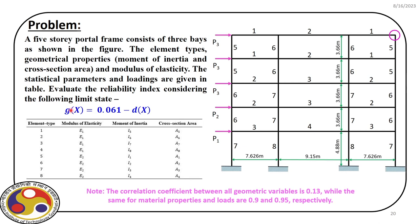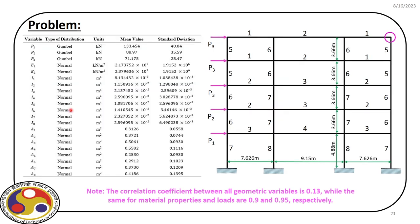All the random variables are defined here. Altogether we have 21 random variables: cross-sectional area, moment of inertia, Young's modulus, and the loads acting on the frame.